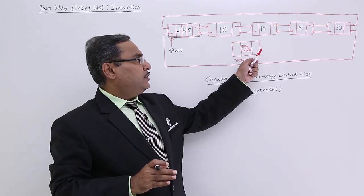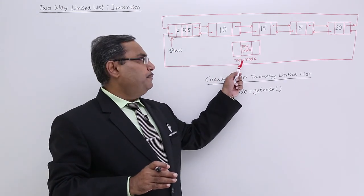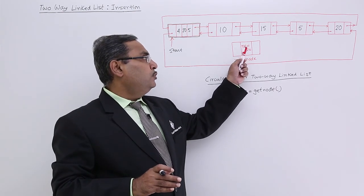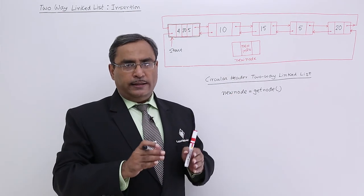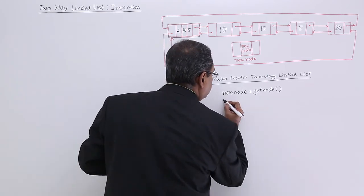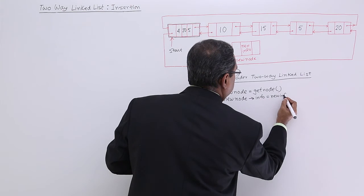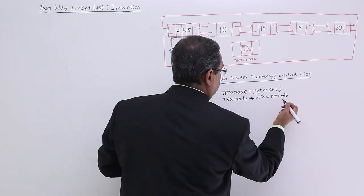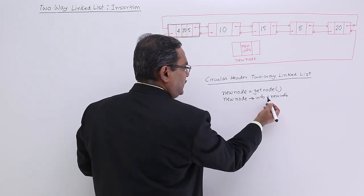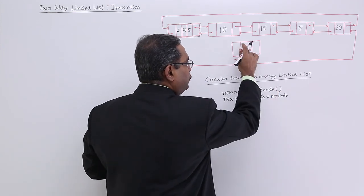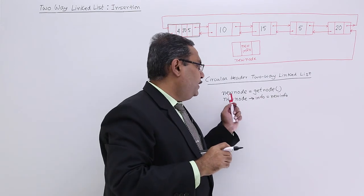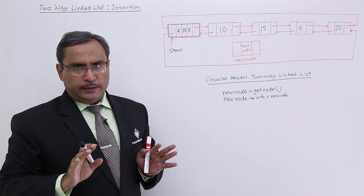This particular structure has got created and it is being pointed by the variable new node. Now, we want to put that new info in the info field of the new node. So: new node implies info is equal to new info. New info has been kept in the info field of the new node.